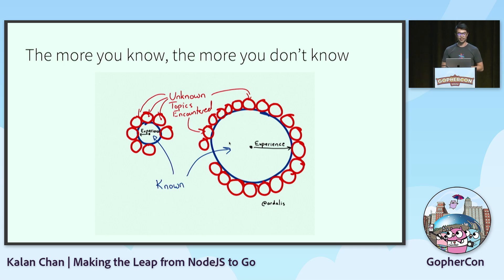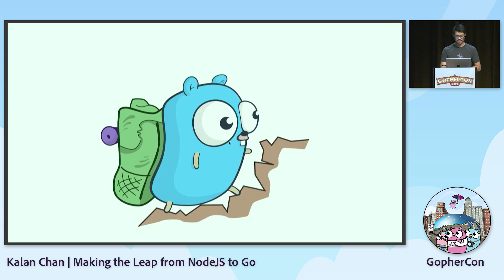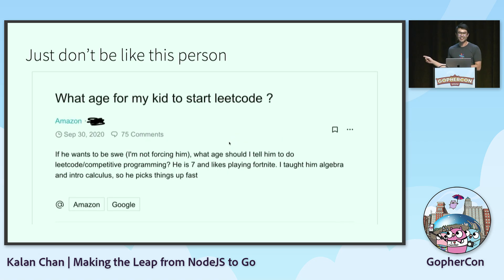This picture illustrates it well: when your experience circle is small, your encounters with unknowns are smaller and you don't see as much. But as you grow and your experience grows wider, your encounters with unknowns become larger and you go down deeper rabbit holes. Learning is kind of like hiking — you've got to start early and take it one step at a time, because you don't really know where the trail is going to lead you. Just don't take it too far, like trying to teach your kid LeetCode at seven years old — that's not the way to do it.